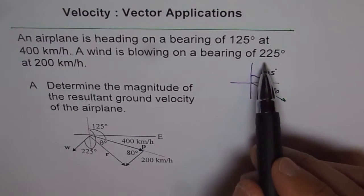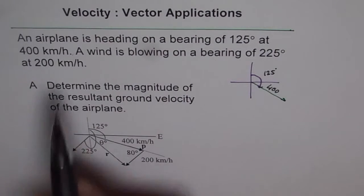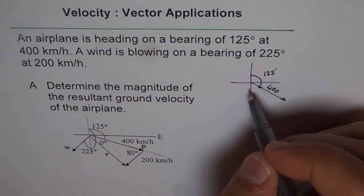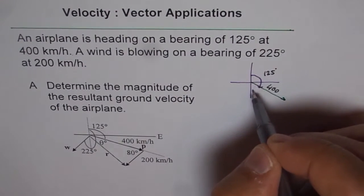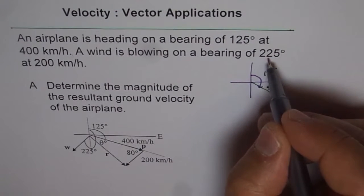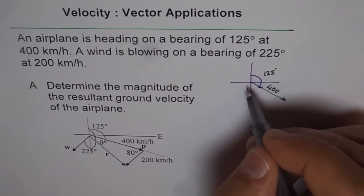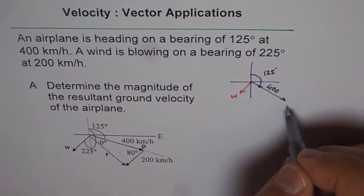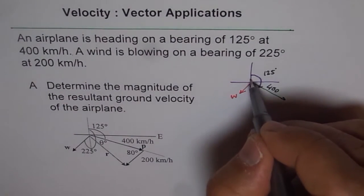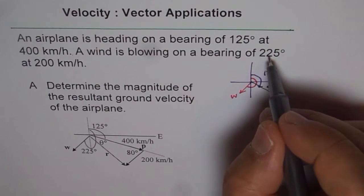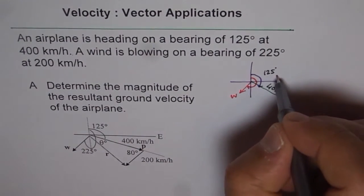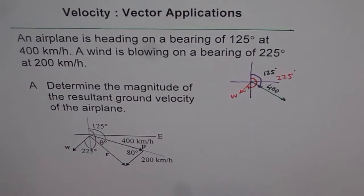It says a wind is blowing on a bearing of 225 at 200 kilometers per hour. I suggest that whenever you are representing the wind, first you draw your line from the origin. Now it says 225. You know this is 180, so 180 plus 45 will give you 225. So that is your wind direction. So that is my wind. I will call this as wind. And I will call that as a plane P. Now this angle from here to here is 225.